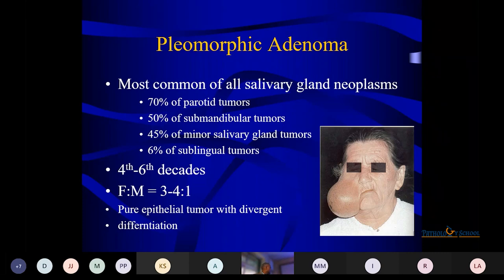They are common in the 4th to 5th decades. I just reported one case of a 30-year-old son of a serving officer with pleomorphic adenoma. They are more common in females, 3–4:1 ratio. They show pure epithelial divergent differentiation — meaning when you see the secondary morphology, you will see chondromatous, chondroid, or myxoid differentiation.